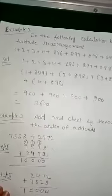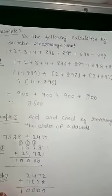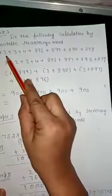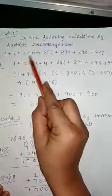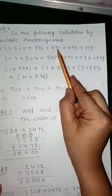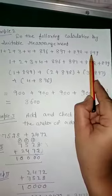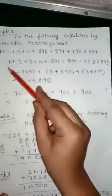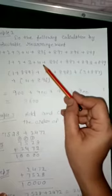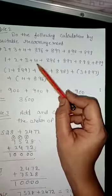Now the second example: do the following calculation using grouping. We should add the numbers in groups such that the calculation becomes simple. The numbers given are 1 + 2 + 3 + 4 + 899 and similar pairs.